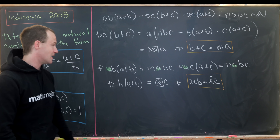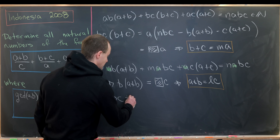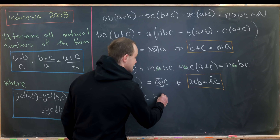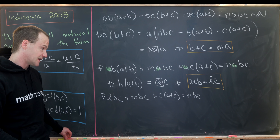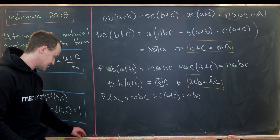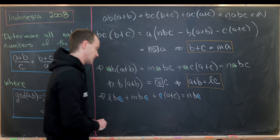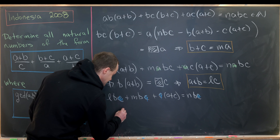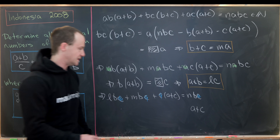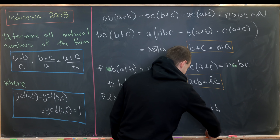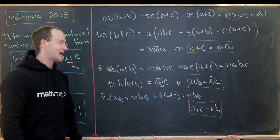Plugging A+B = L·C back in allows more simplification. We get L·B·C + M·B·C + C·(A+C) = N·B·C. Everything is a multiple of C, so we cancel C throughout. Solving for A+C from the remaining equation, we find that A+C is a multiple of B, so we write A+C = K·B.